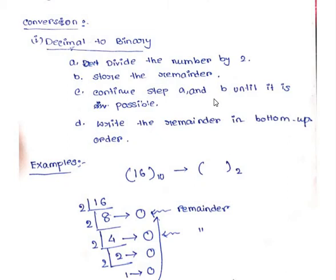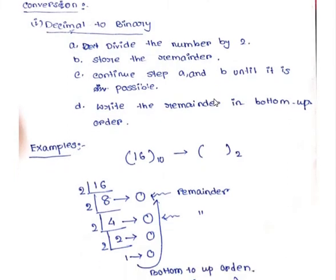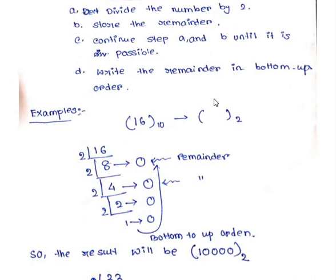I can convert a decimal number to its equivalent octal number or to its equivalent hexadecimal number. So if a number is given in the decimal number system, how can we convert it to an equivalent binary number? What I am going to do is divide the number by 2. Whatever the remainder is, I am going to store the remainder, and I will continue this process till I get a number which is lesser than 2.